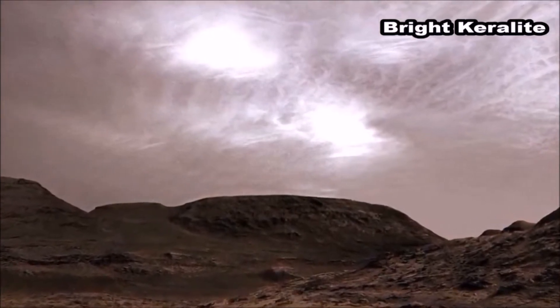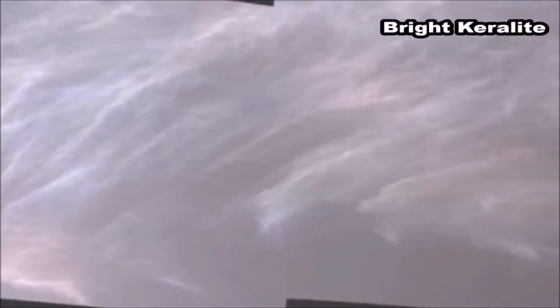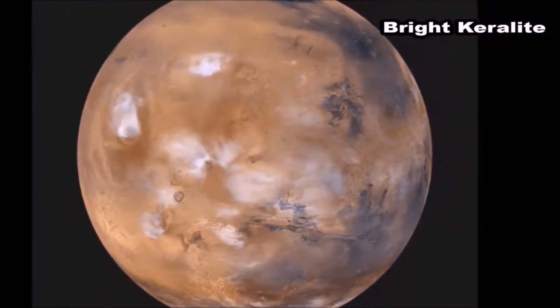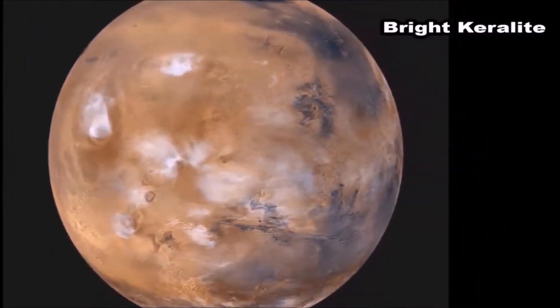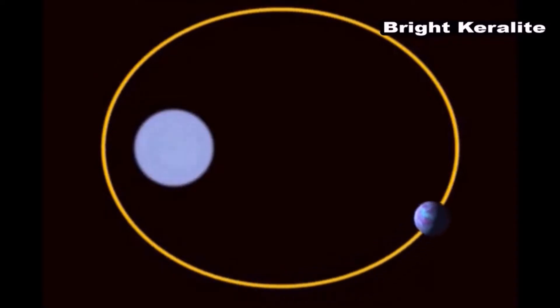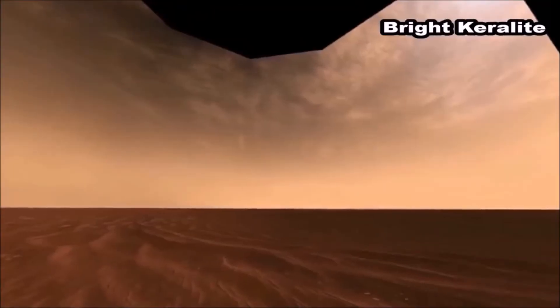Curiosity took these pictures after 3,063 days of reaching Mars. High cold happens on Mars when the planet stands at a large distance from the Sun. Mars orbits the Sun in an elliptical path. At some point of this elliptical path, Mars stands very distant from the Sun. It is at this time that clouds are formed on the equator of Mars.